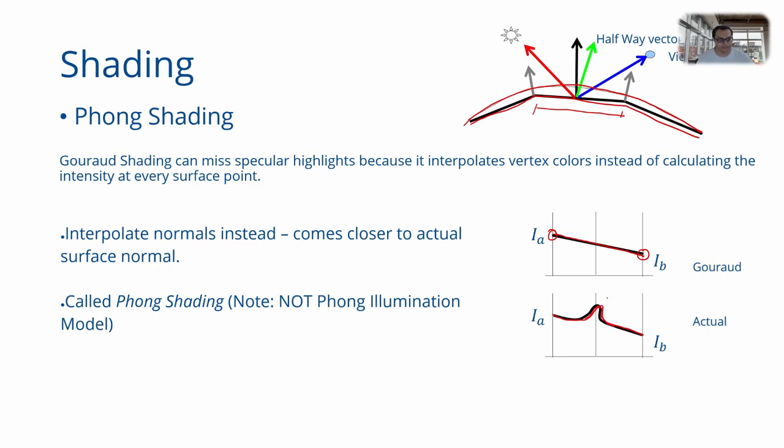In that case, the actual profile of intensity would have had this bump. There is no way for you to capture an intensity profile like this using Gouraud shading because all Gouraud shading can do is linearly interpolate between Ia and Ib. There is no way for Gouraud shading to capture a highlight smaller than the size of the facets.